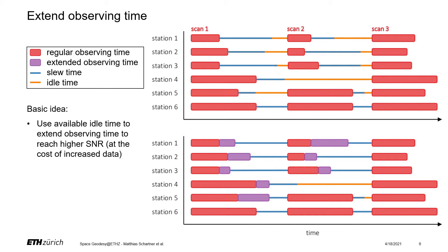Another concept to reduce idle time: in the same situation, if there is idle time between scans but not enough to add fill-in mode scans, we can simply extend the observing time of the previous scans to reduce that idle time. This will give you a higher signal-to-noise ratio and thus a more precise observation. The downside is that you record more data that has to be shipped to the correlator.